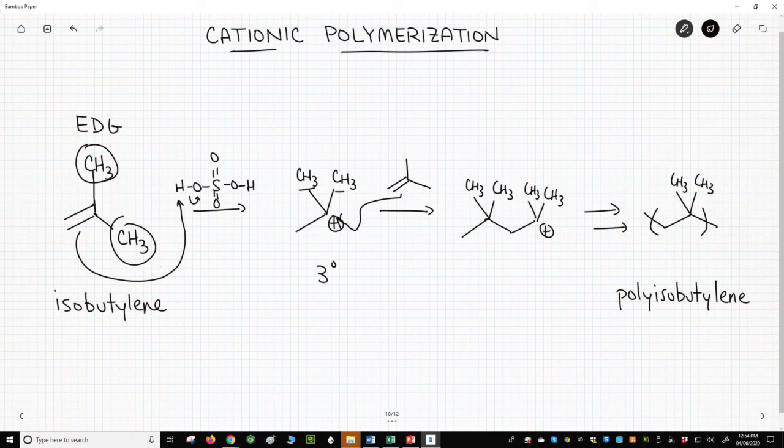For a cationic polymerization, you need the monomer to form a somewhat stable cation intermediate. That happens if you have at least one EDG-R group on your alkene. In this example, we have two EDGs, two methyls, but one is often adequate.